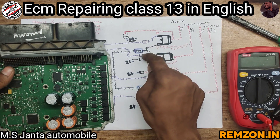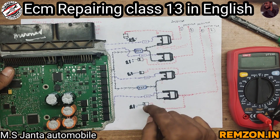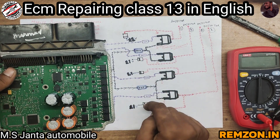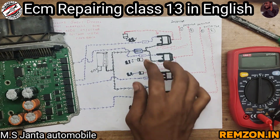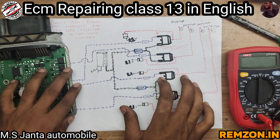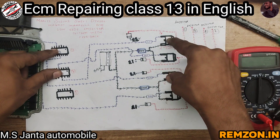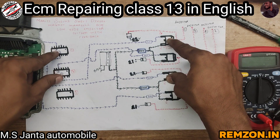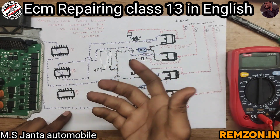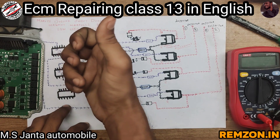Here are the four N-channel MOSFETs. Here is a 201 resistance — it means 200-ohm resistance. Here are zero-ohm resistances. Here are one, two, three, four diodes — these diodes are used for protection. I will explain further how they protect the circuit. This is the injector MOSFET switching actuating IC — you can say switching or actuating, both are the same.